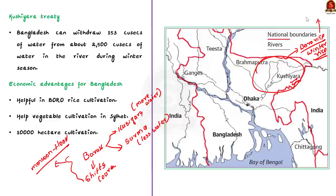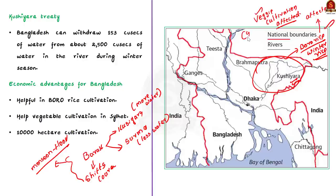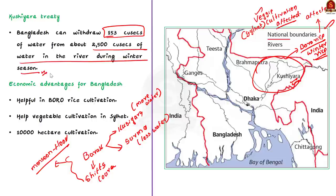Also, Sylhet is famous for its vegetables, and this cultivation also depends on Kushiyara's water. Less water in the Kushiyara River during winter is therefore the core issue. After the Kushiyara River Treaty is finalized, Bangladesh will receive its fair share of the river's water during winter. Bangladesh will be able to withdraw 153 cusecs of water out of approximately 2,500 cusecs available during the winter season, benefiting cultivation on around 10,000 hectares of land on the Bangladeshi side.